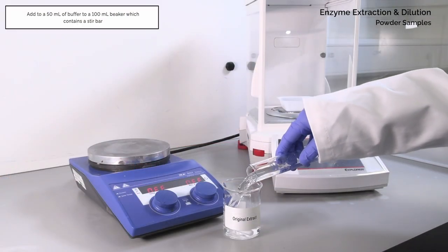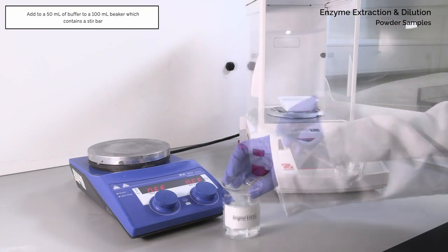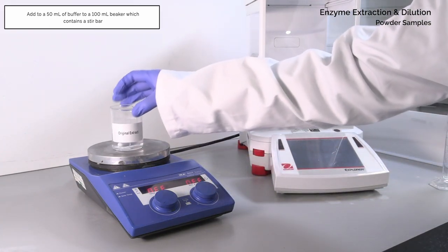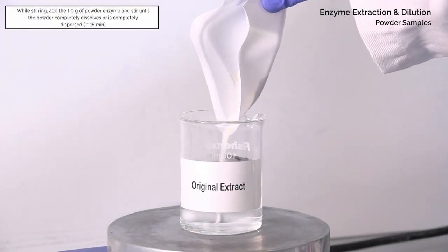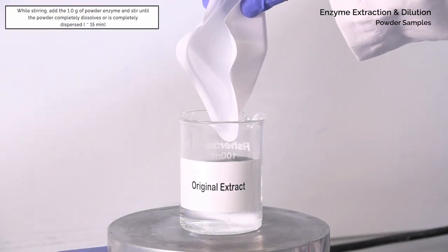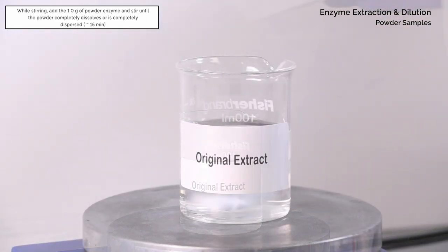Add 50 milliliters of buffer to a 100 milliliter beaker which contains a stir bar. While stirring, add the 1 gram of powdered enzyme and stir until the powder completely dissolves or is completely dispersed, approximately 15 minutes.